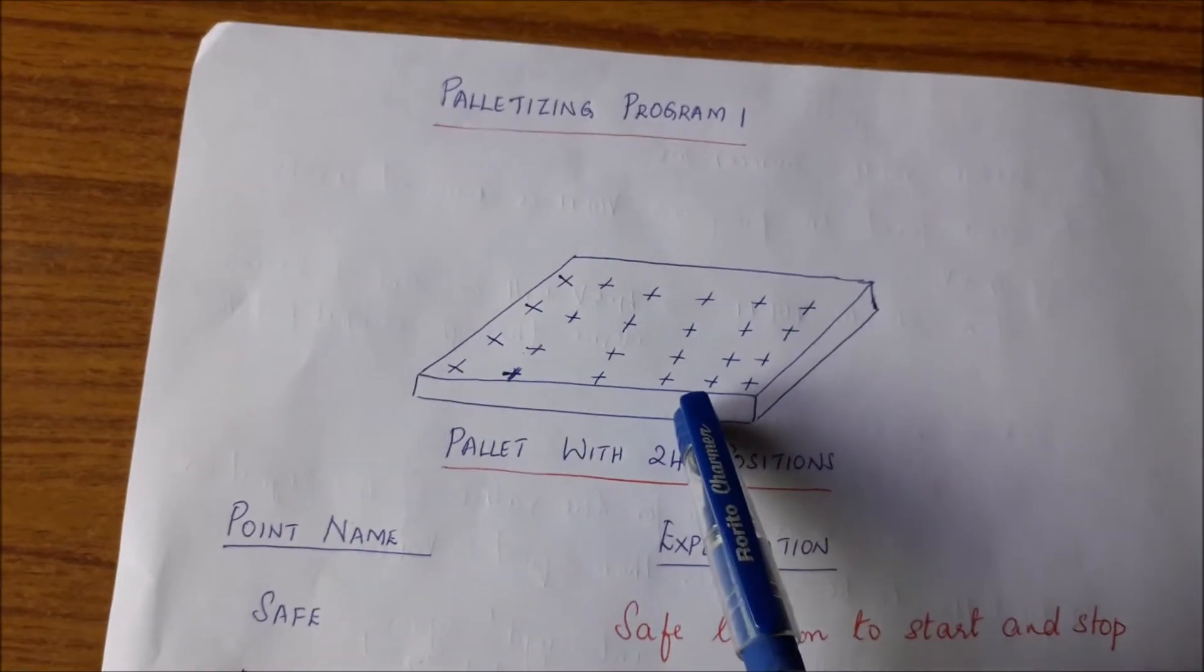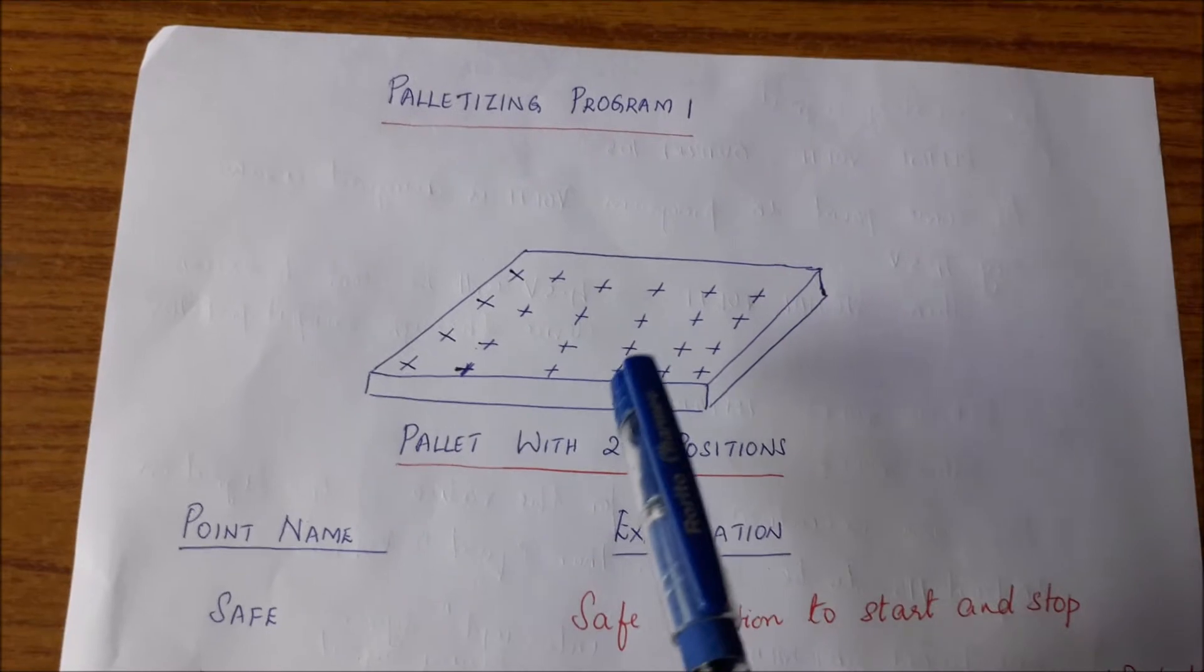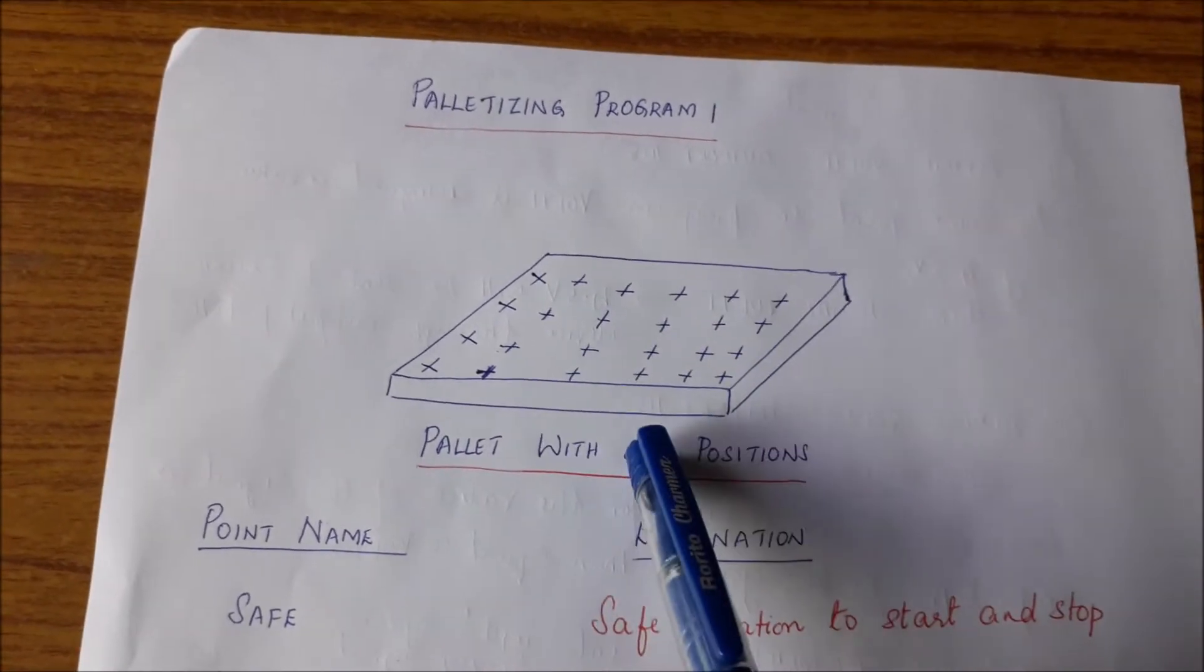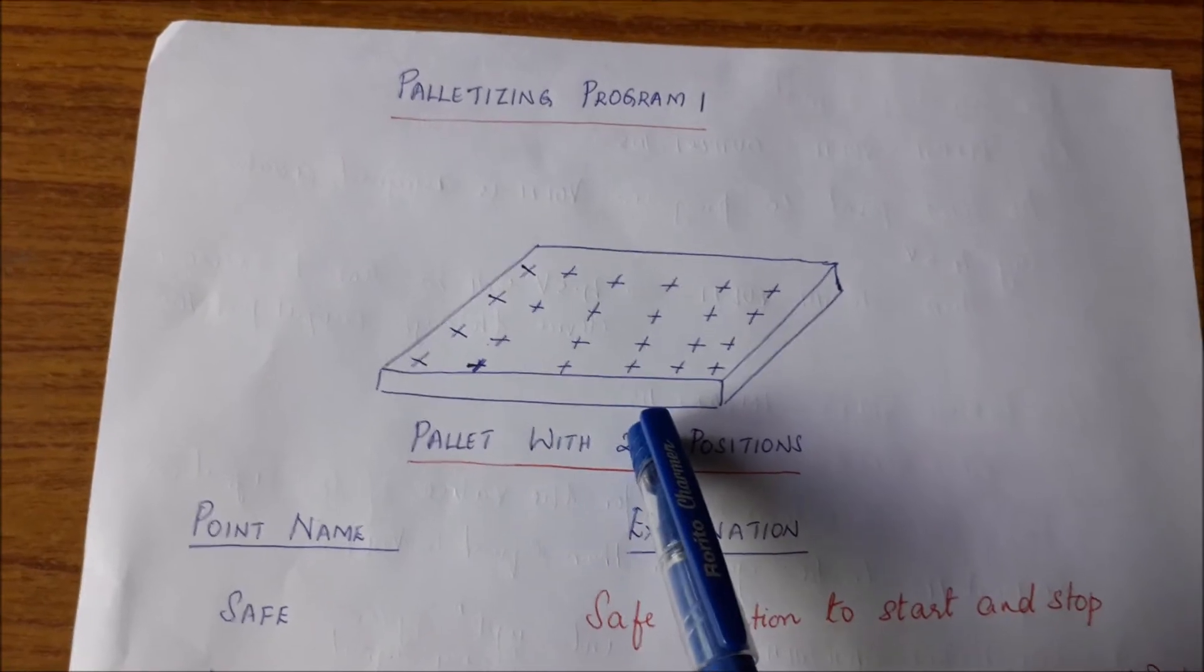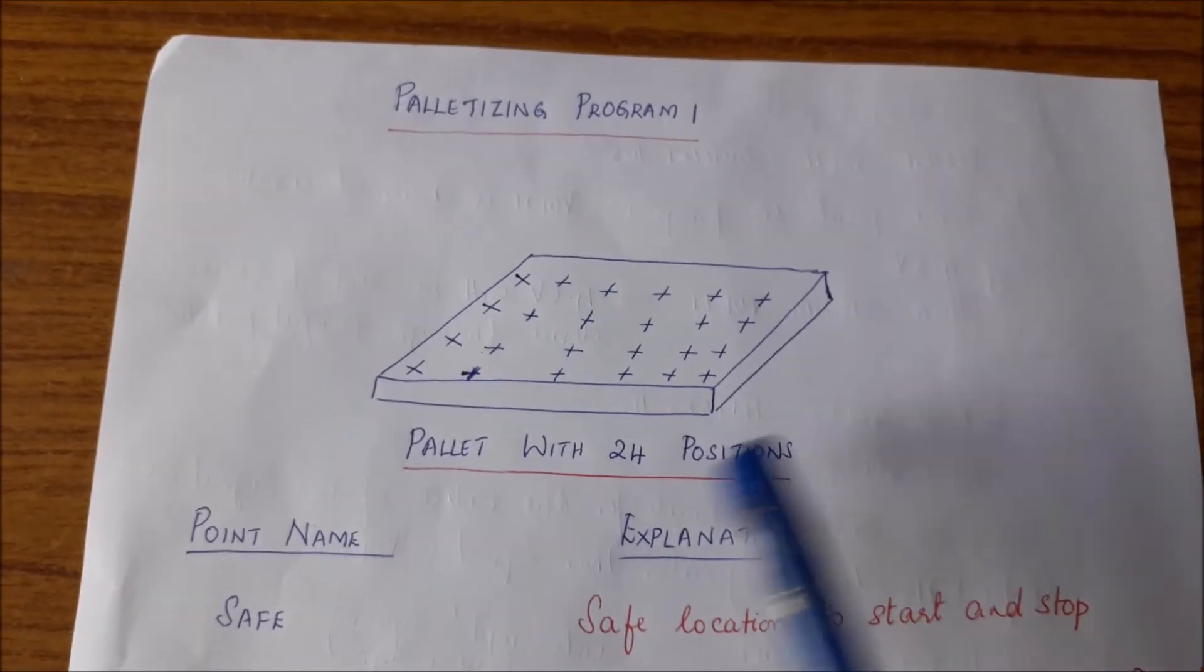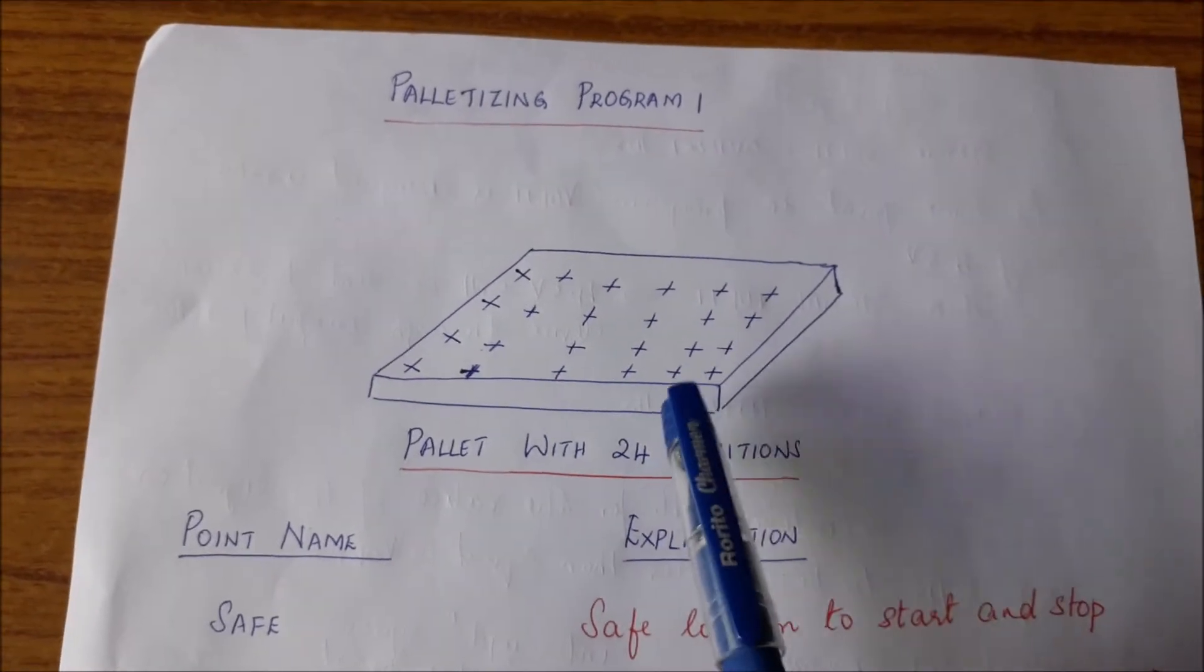And once the pallet is full, that pallet will be taken away with the 24 parts. And then another pallet will be brought here and the next 24 parts can be loaded. This operation is called palletizing. Instead of taking individual parts and moving them elsewhere, at a time 24 parts are moved. And these parts are placed in the pallet by the robot.